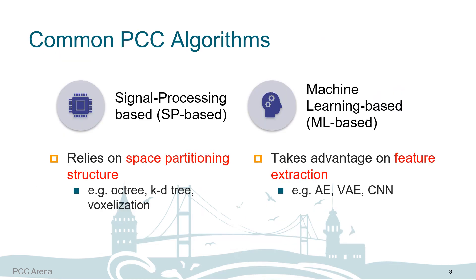Common PCC algorithms can be categorized into two types: signal processing-based and machine learning-based. SP-based methods use space-partitioning data structures like OctTree and KDTree, plus voxelization to improve quantization, hence reducing data size. ML-based methods store features extracted with AE, VAE, GAN, and so on, and reconstruct the point cloud with those features.